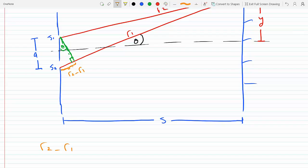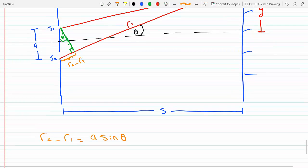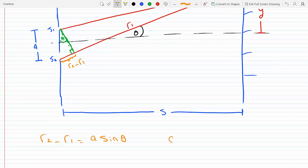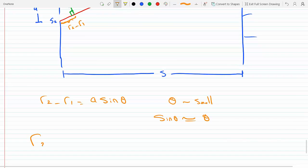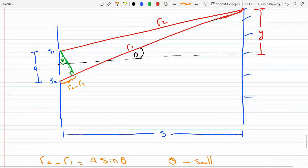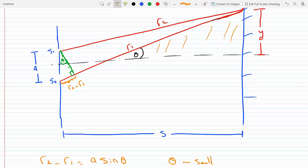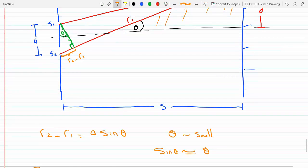We know that r2 minus r1 will equal a sin theta, and at the same time we know that theta is very small, so from Taylor series we know that sin theta is approximately equal to theta. So that will tell us that r2 minus r1 is equal to a theta. If I look at this triangle here, I could see that sin theta...